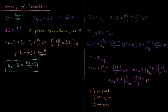So the entropy change of transition, delta_trs S, as we would indicate it right here, where for whatever transition we have we would fill that in for 'trs'. Entropy is an extensive state function, so it just depends on the final and initial entropies. That gives us the integral from initial to final of ds, which equals the integral of dh over T. Since temperature is not changing, we can pull 1/T out of the integral, giving us (1/T) times the integral of dh. Since enthalpy is also a state function, that integral is just H_final minus H_initial, so we get delta_trs H divided by T equal to delta_trs S.